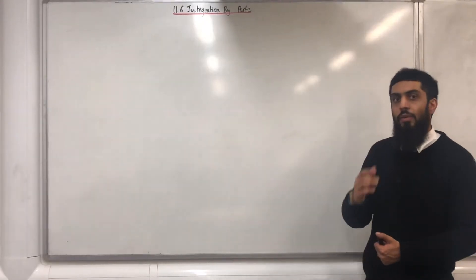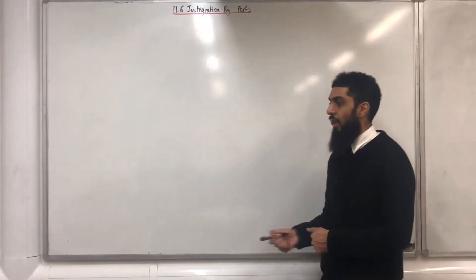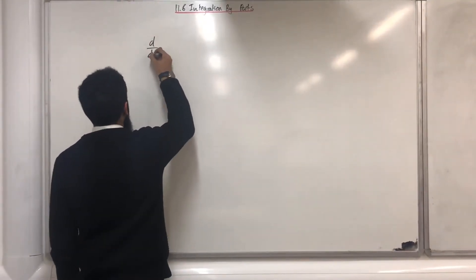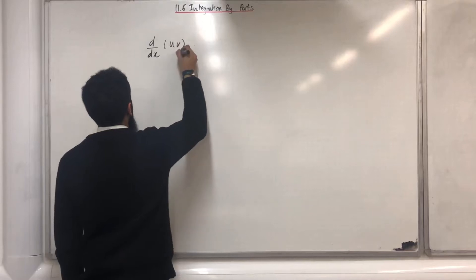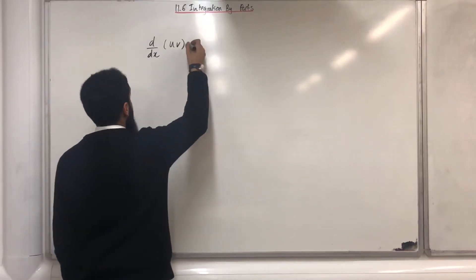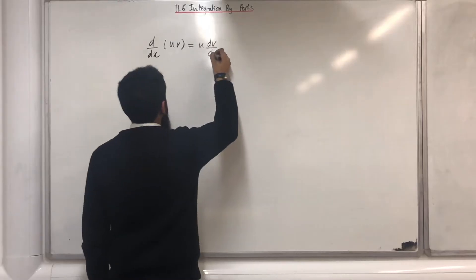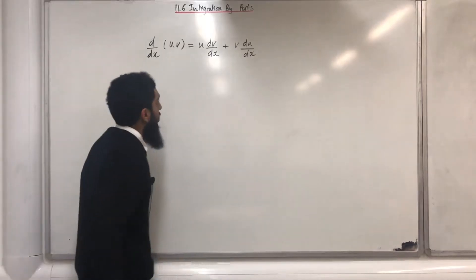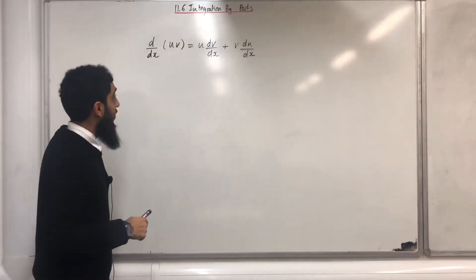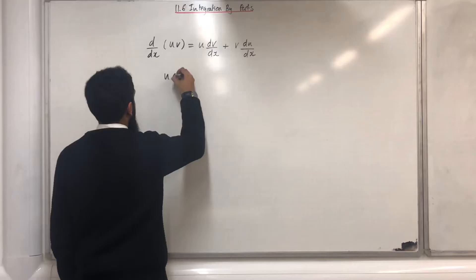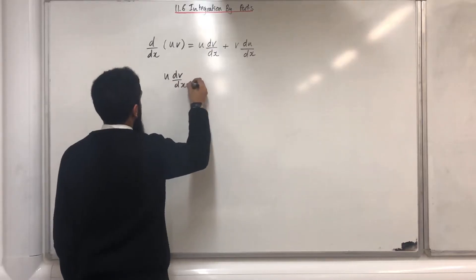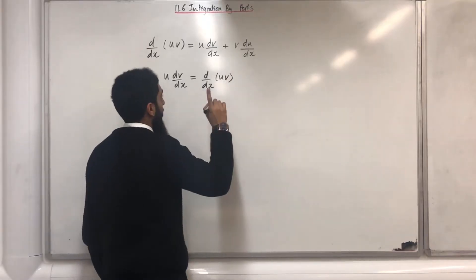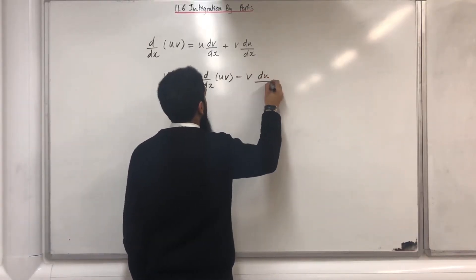The first step in the proof is to write down the product rule for differentiation. The product rule says, if we differentiate with respect to x the product uv, where u and v are both functions in x, we get u dv/dx plus v du/dx. Now I'm going to make u dv/dx the subject, so u dv/dx equals d/dx of uv minus v du/dx.